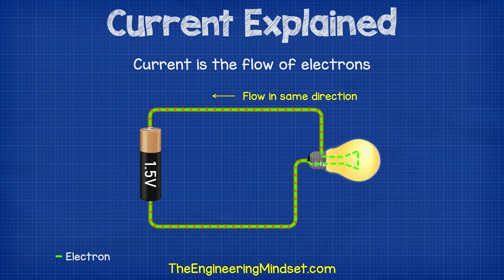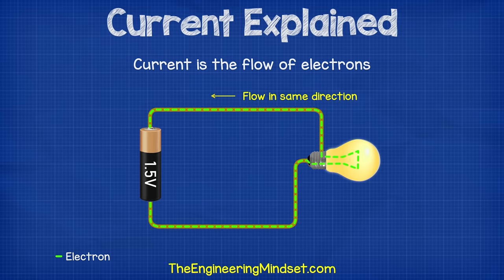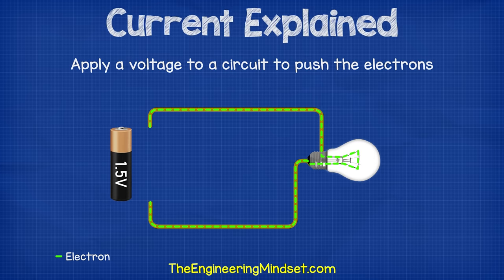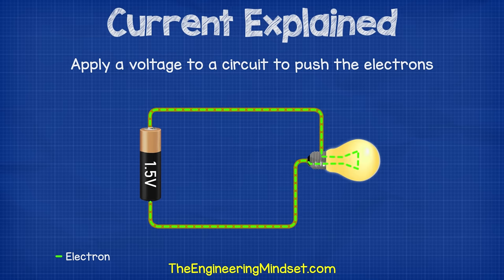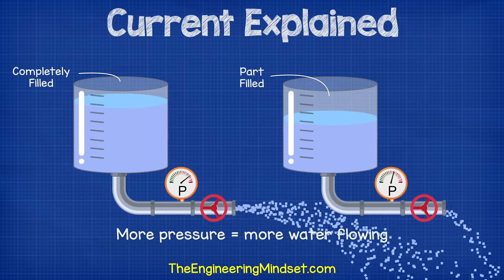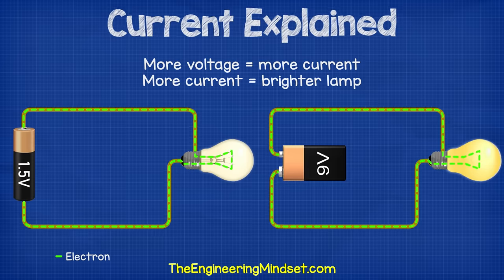For us to make use of this, we need lots of electrons to flow in the same direction along the circuit. We can then place things like lamps in the way of these electrons so that they flow through it and generate light and heat. To do this, we need to force the electrons to move and we can do that by applying a voltage. Voltage is the pushing force — it's like pressure in a water pipe. The more pressure we have, the more water can flow. The more voltage we have, the more electrons can flow.